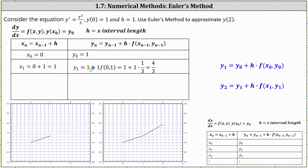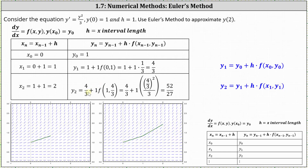Now that we have x sub one and y sub one, we can determine x sub two and y sub two. x sub two is equal to x sub one plus h, which in our case is one plus one, or two. Using the formula for y sub n with n equal to two, y sub two is equal to y sub one plus h times f of x sub one comma y sub one, which gives us y sub two equal to four thirds plus one times f of one comma four thirds. To find f of one comma four thirds, we substitute four thirds for y in y squared divided by three, and therefore y sub two is equal to four thirds plus one times the square of four thirds divided by three, which simplifies to 52 over 27.